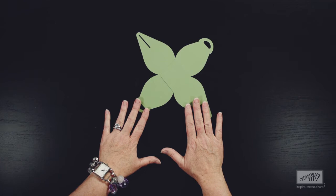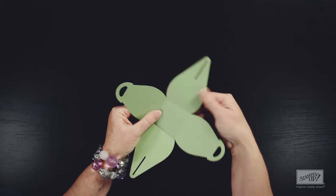I mentioned before that the die also scores while it's cutting. So all I have to do is fold these pieces in. The score lines are already all there.